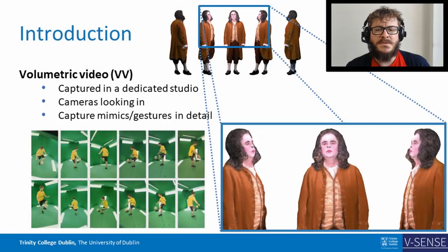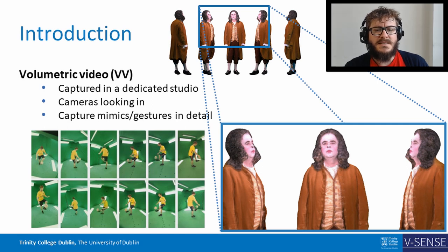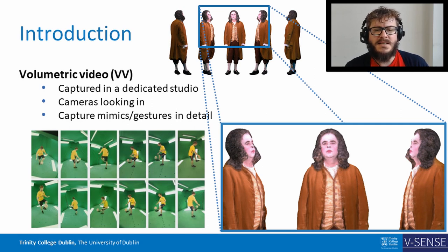Volumetric video is also known as 3D video or free viewpoint video and it is created using real-life, live-action video footage. VV reconstructs a 3D scene by placing multiple cameras around an object or person. The number of cameras used can vary, but the scene is always simultaneously recorded from multiple angles and a sequence of 3D models is generated with bespoke 3D reconstruction techniques.